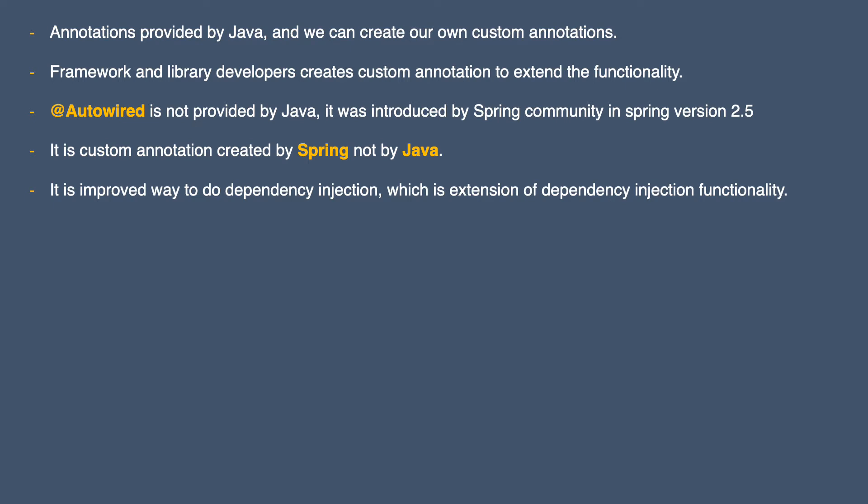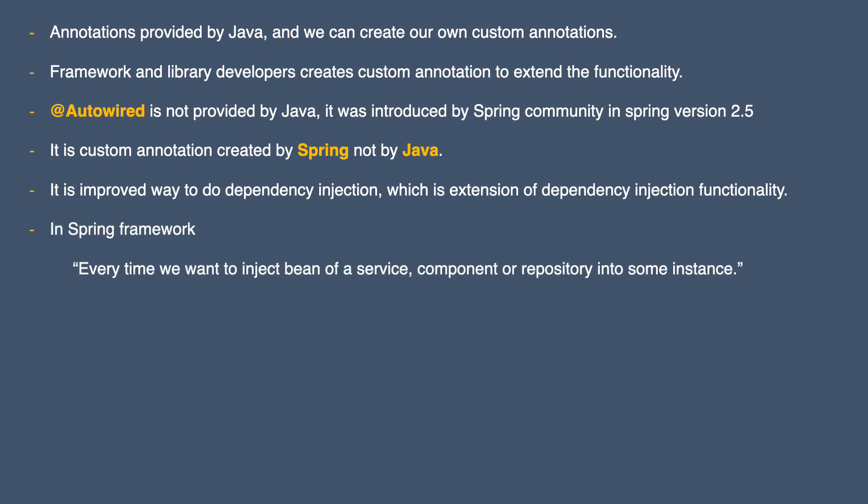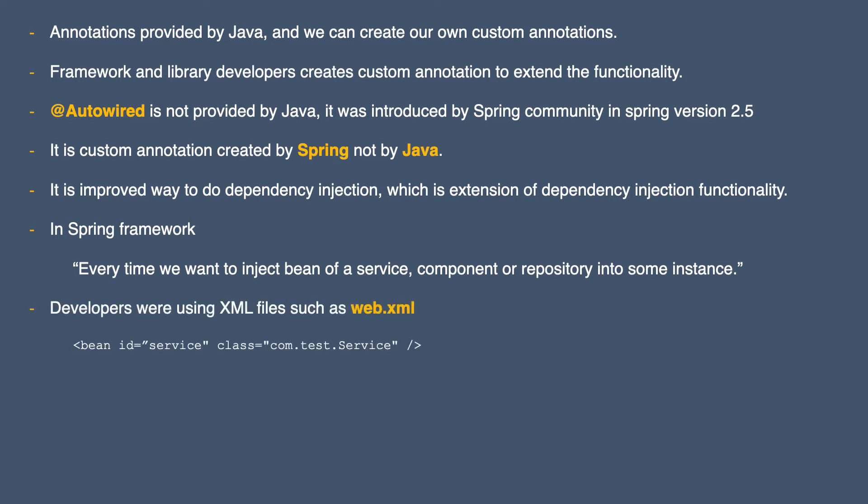If you don't know what dependency injection and beans are, please watch my tutorials on fundamentals of Spring Boot — I've put a link in the description. For now, understand that in Spring framework, every time we want to inject a bean of a service, component, or repository into another object, we need to do dependency injection. Before autowire annotations, developers were using XML files for this purpose, such as web.xml, and used to write XML lines like this — these XML files are outside of the Java file.